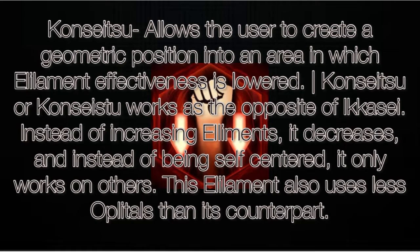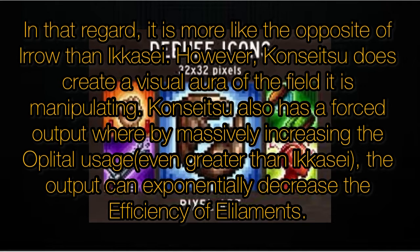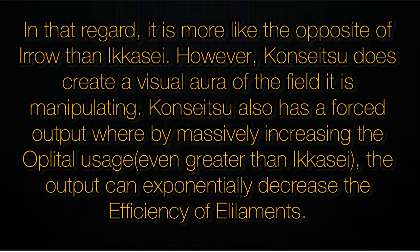Koncietsu allows the user to create a geometric position into an area in which element effectiveness is lowered. Koncietsu works as the opposite of ikase — instead of increasing elements it decreases them, and instead of being self-centered it only works on others. This element also uses less oplotals than its counterpart. Koncietsu does create a visual aura of the field it is manipulating. Koncietsu also has a forced output whereby massively increasing the oplotal usage, even greater than ikase, the output can exponentially decrease the efficiency of elements.